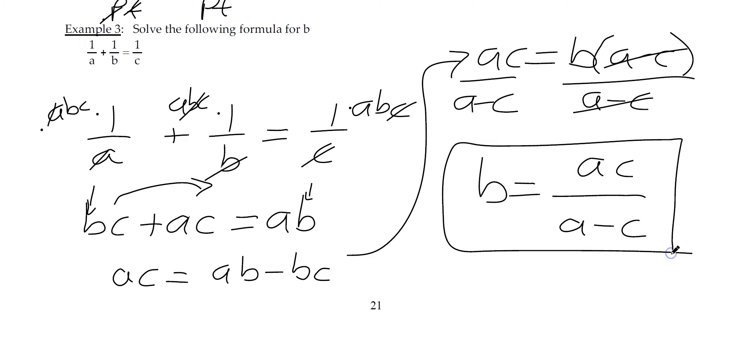And this problem illustrates that after you clear fractions and distribute any parentheses, if you have more than one instance of what you're trying to solve for, get them on the same side and factor them out so there's just one instance and you can solve for it. All right.